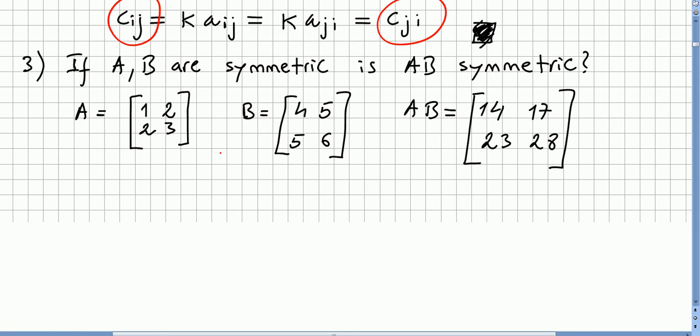So it's very easy to check that A is symmetric, because if you take its transpose, you're going to get 1, 2, 2, 3. And B is also symmetric, because you take 4, 5, 5, 6. And you get two symmetric matrices, A and B.